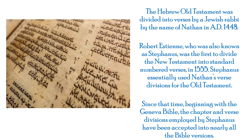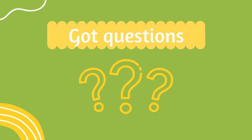In 1555, Stephanus essentially used Nathan's verse divisions for the Old Testament. Since that time, beginning with the Geneva Bible, the chapter and verse divisions employed by Stephanus have been accepted into nearly all Bible versions.